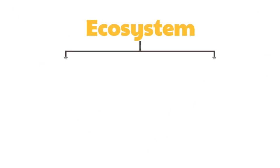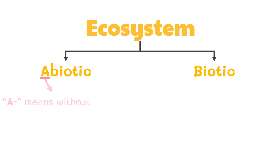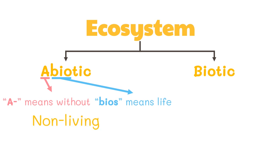An ecosystem is made up of abiotic and biotic components that work together to maintain balance. Preceded by the prefix 'a,' meaning without, and the Greek word 'bios,' meaning life, abiotic means without life — it is the non-living component or the physical and chemical aspect of an ecosystem. The biotic component, on the other hand, is the living component, including all living organisms that are dependent on one another.